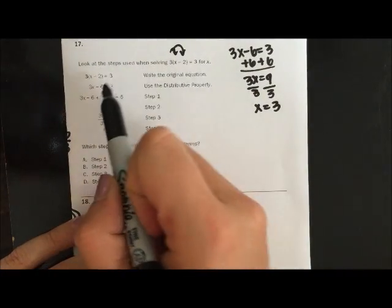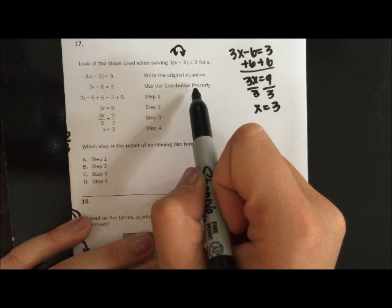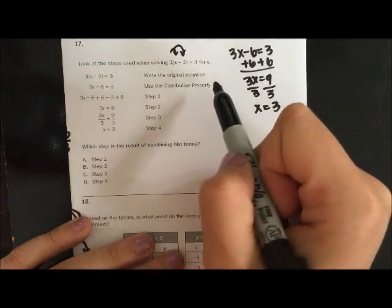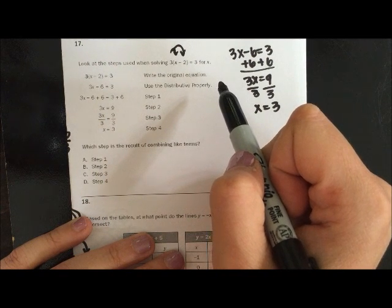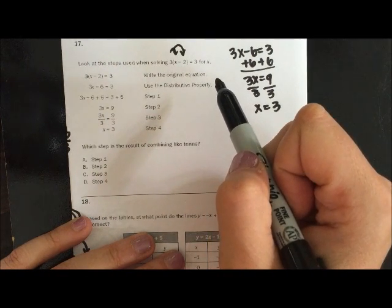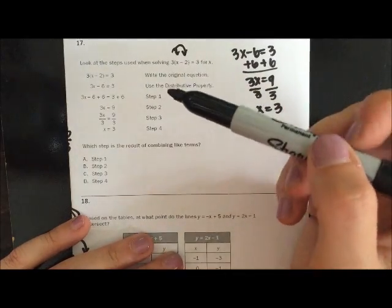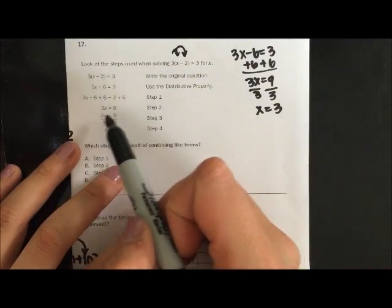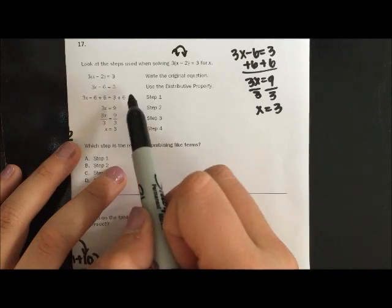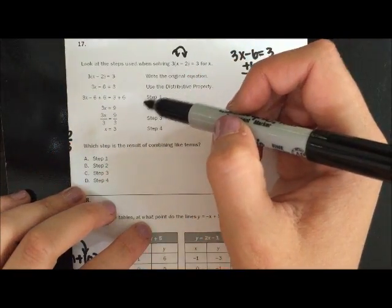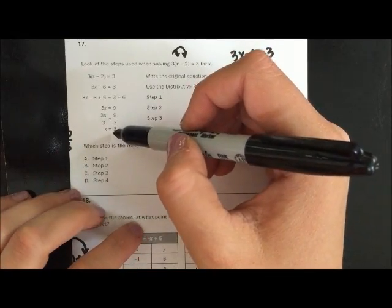So it says write the original equation. Use the distributive property. So 3 times x minus 6 equals 3. That looks good. And then it shows us adding the 6 to both sides. And then it shows us the dividing by 3. And it shows us equals 3.